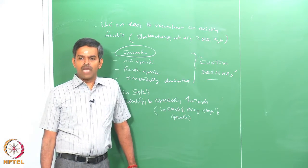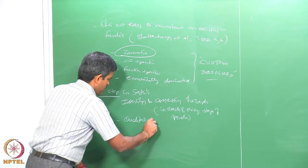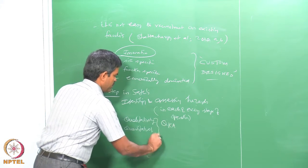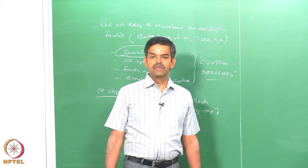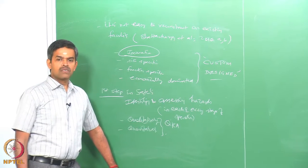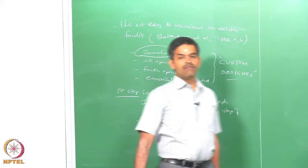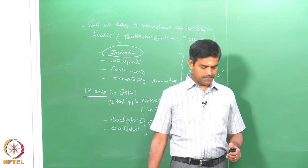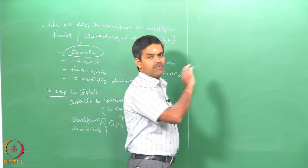Identifying and assessing hazards can be done in two ways: qualitatively or quantitatively — both are forms of QRA. Qualitatively we assess hazards through what we call hazard studies; quantitatively we analyze hazards through risk assessment, because risk deals with numbers — the probability of exceedance of a value in terms of accepted goals. Having said this, let us talk about some lessons we could learn from accidents.